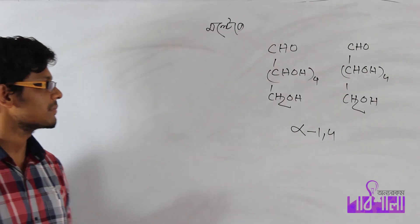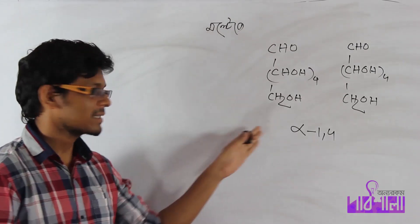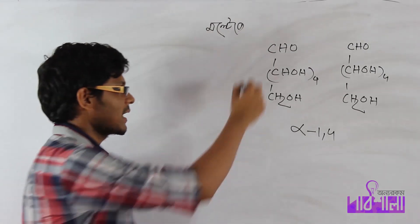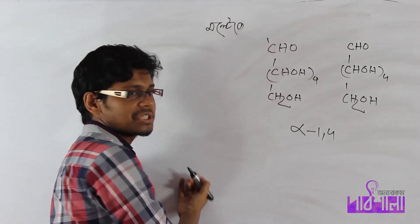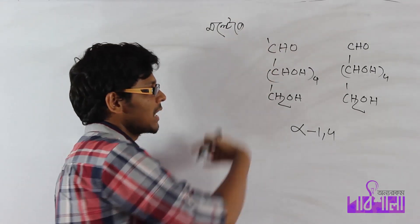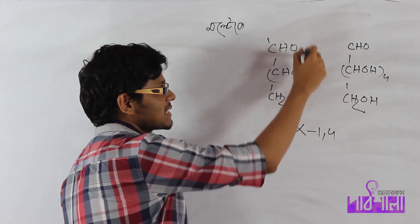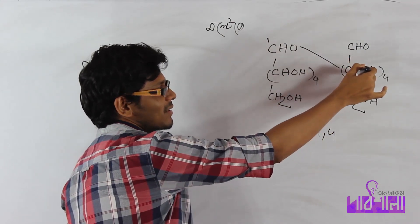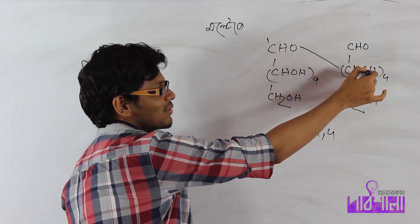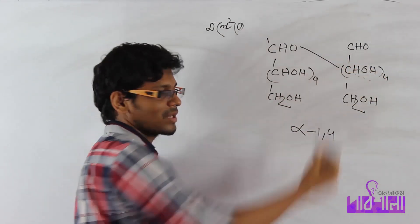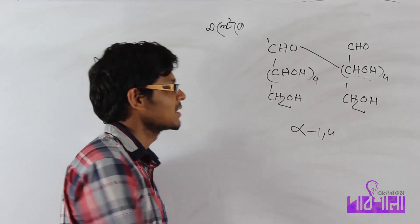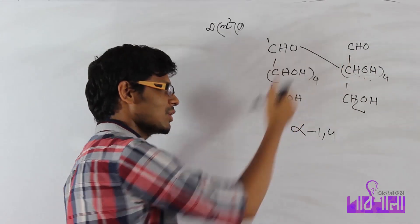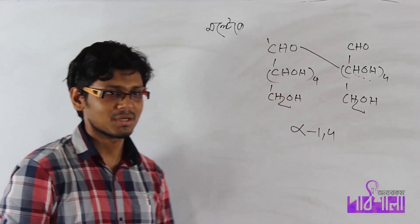So, the glycosidic bond is between carbon number 1 of one glucose and carbon numbers 2, 3, 4, and 5 of the other glucose — specifically at carbon number 4.